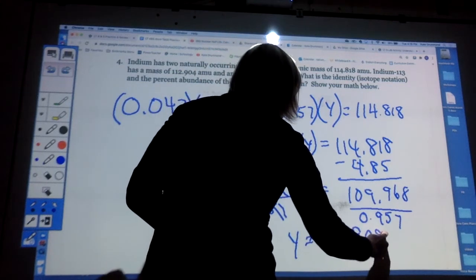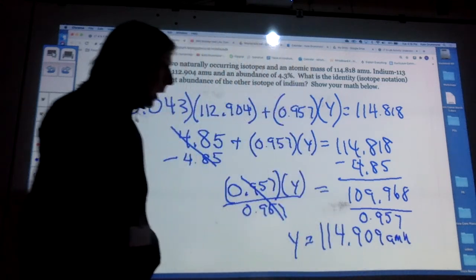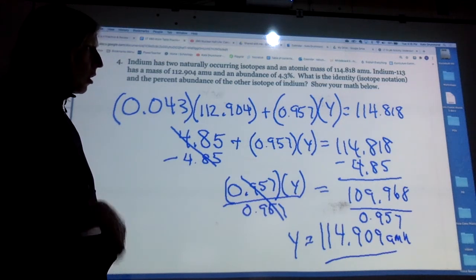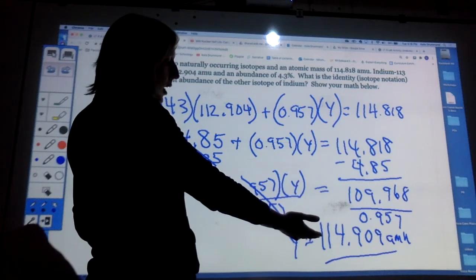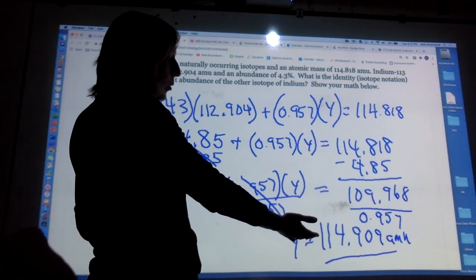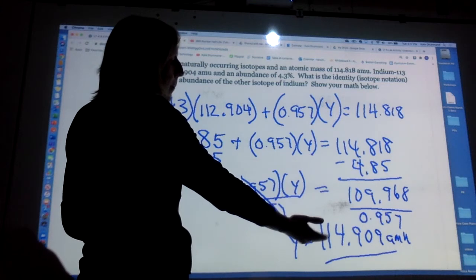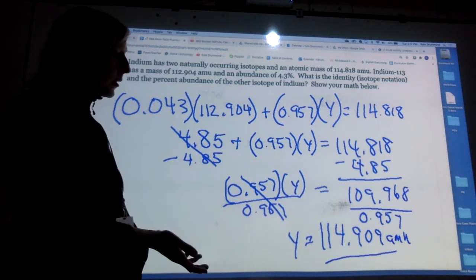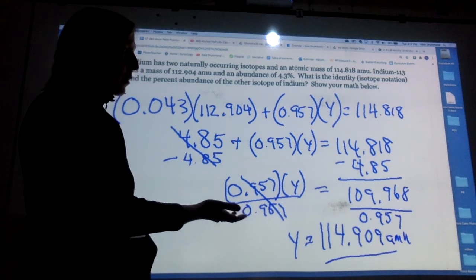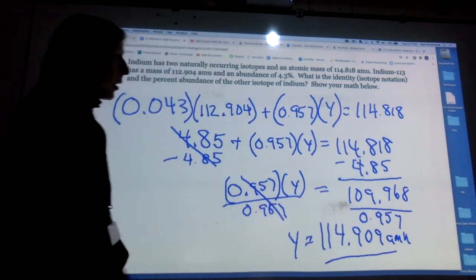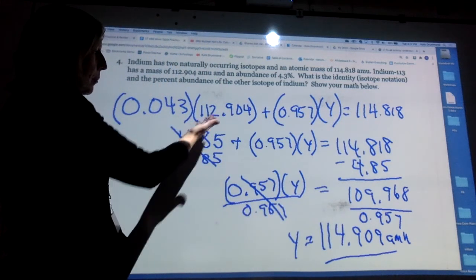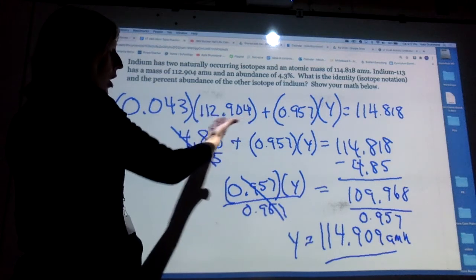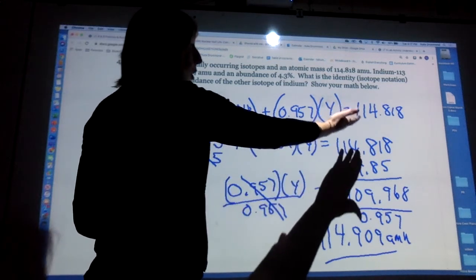This answer makes sense to me because 95.7% of all indium isotopes are made up of indium-114.909, and that mass is very close to the average. It makes sense because the majority of indium isotopes are 114.909, so the average mass should be close to that number. Only 4% are made up of the isotope indium-113, so the mass is not going to be, the average mass is not going to be close to 113, it's going to be closer to 114.